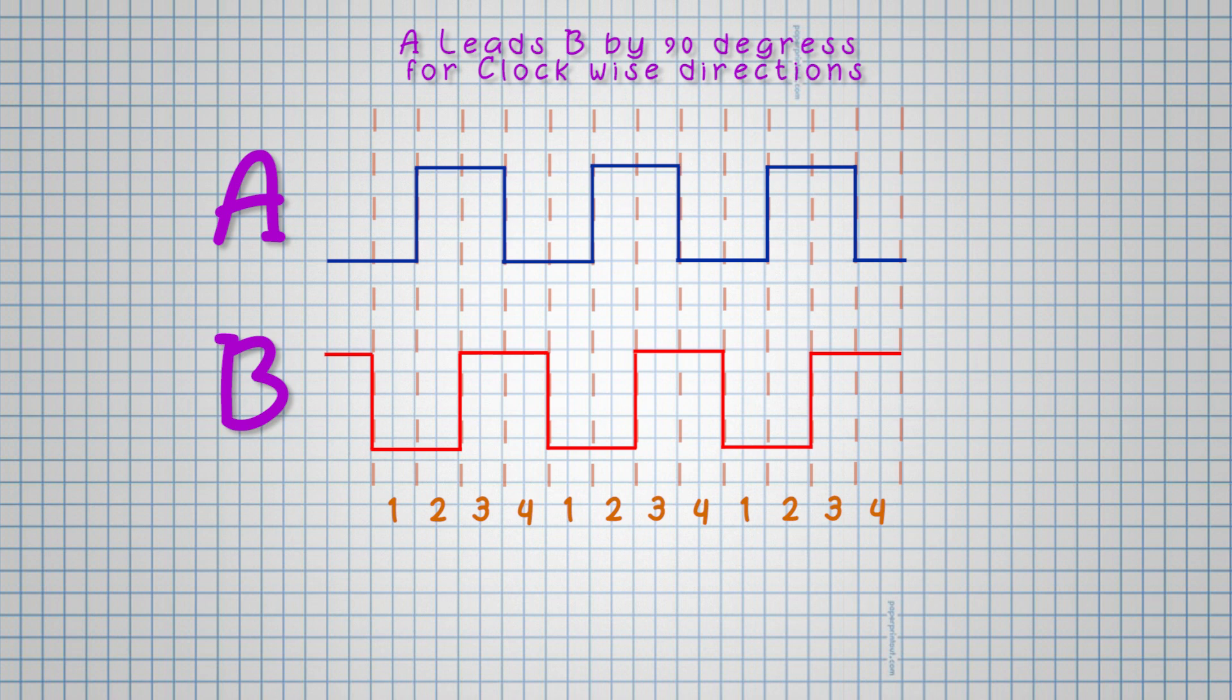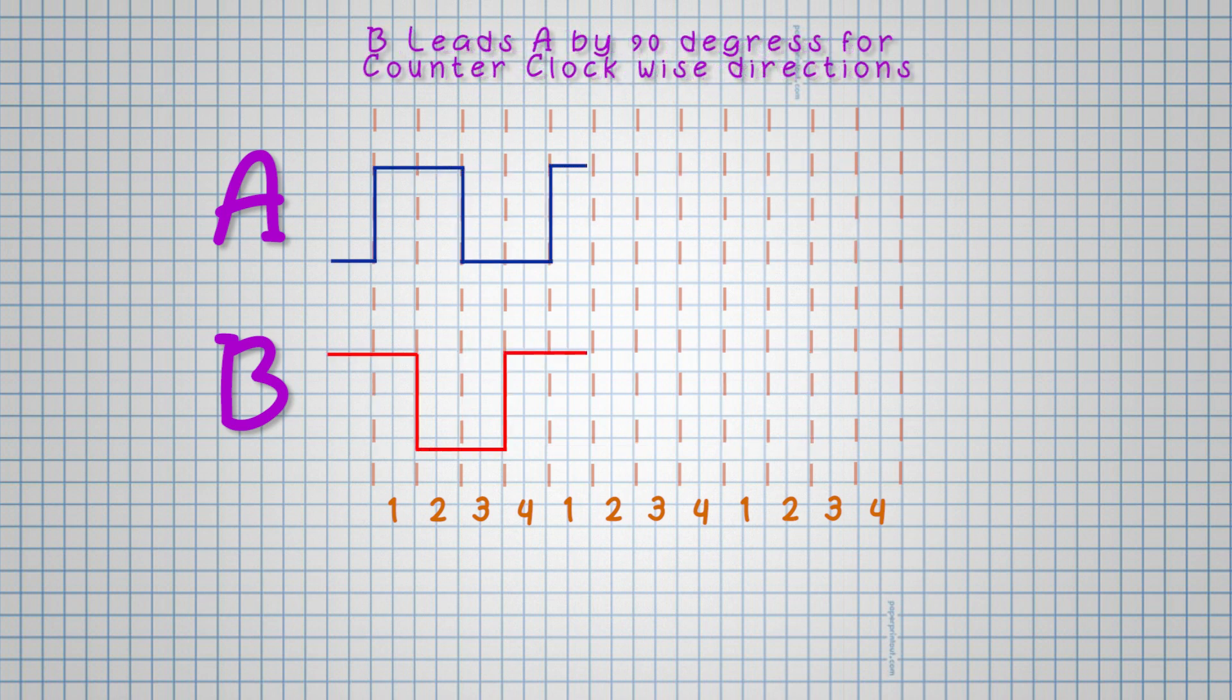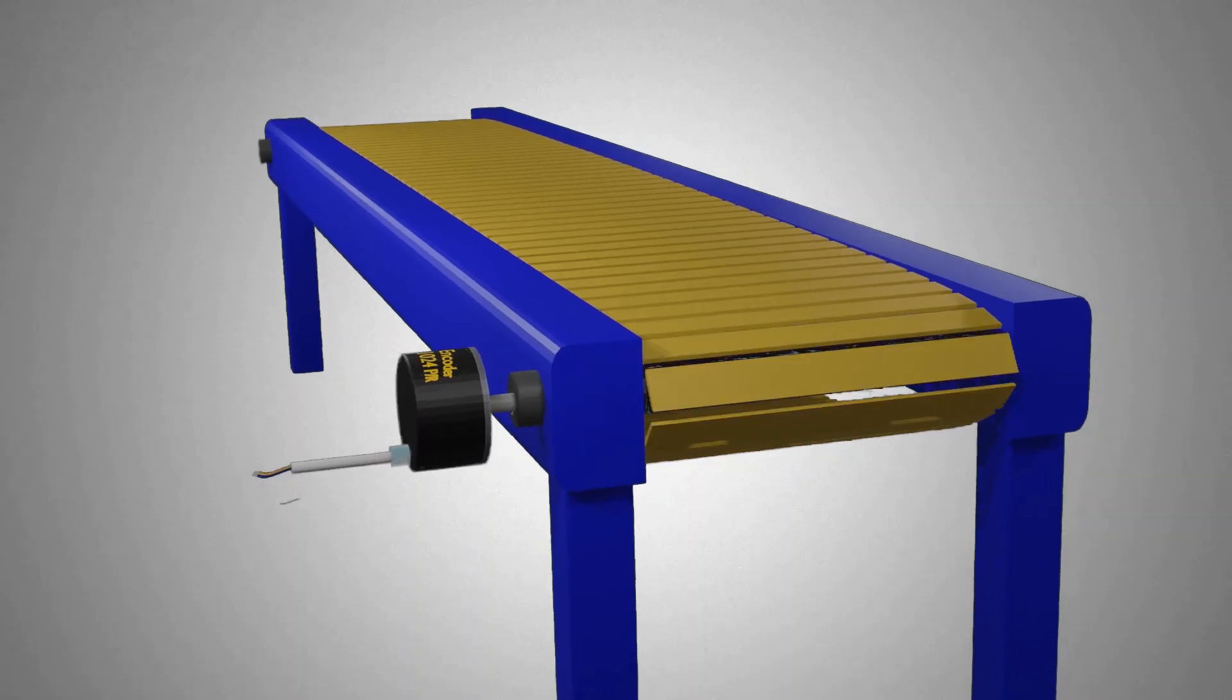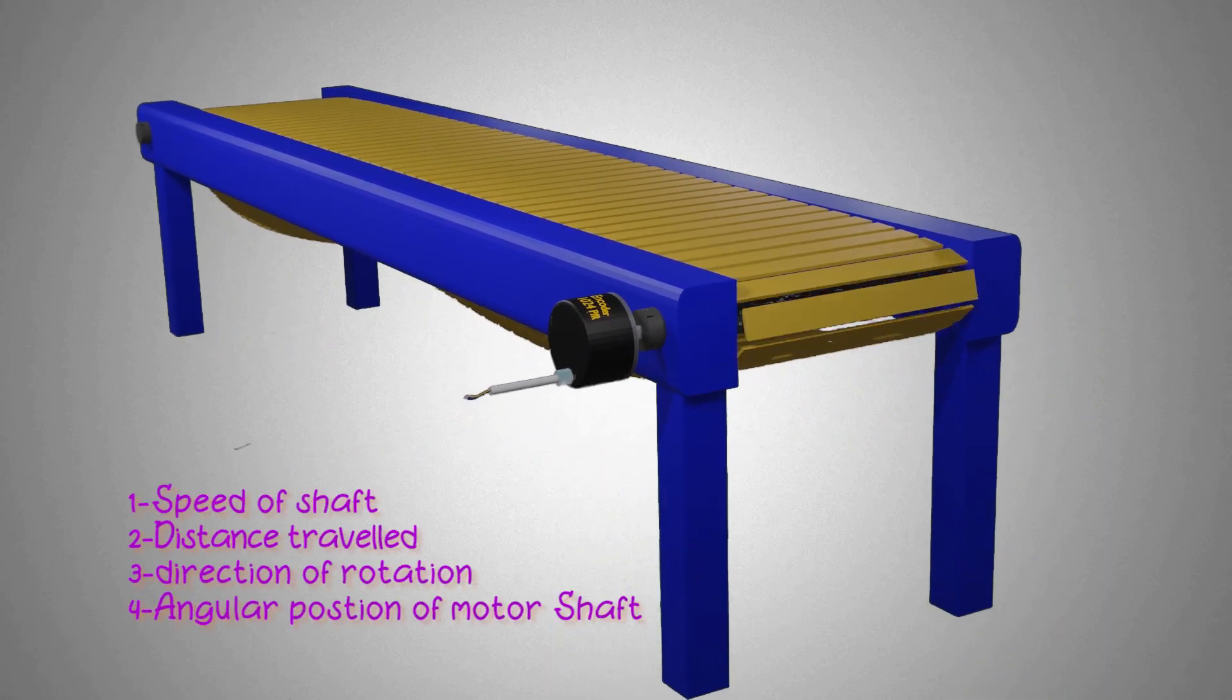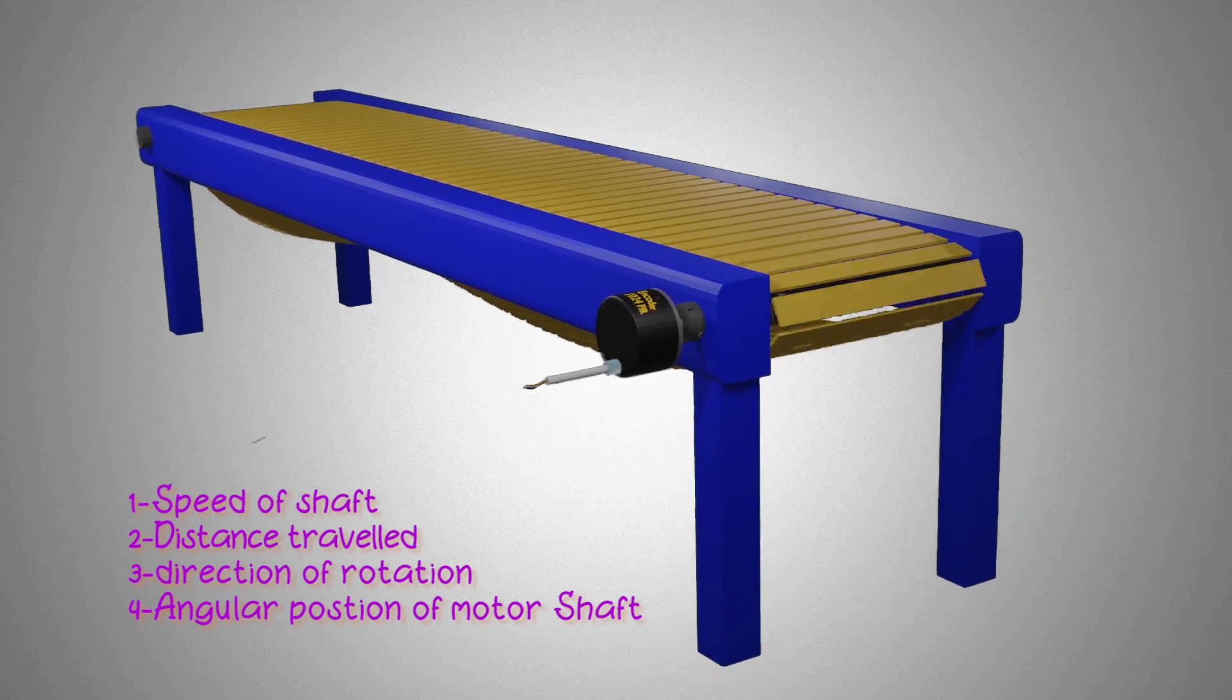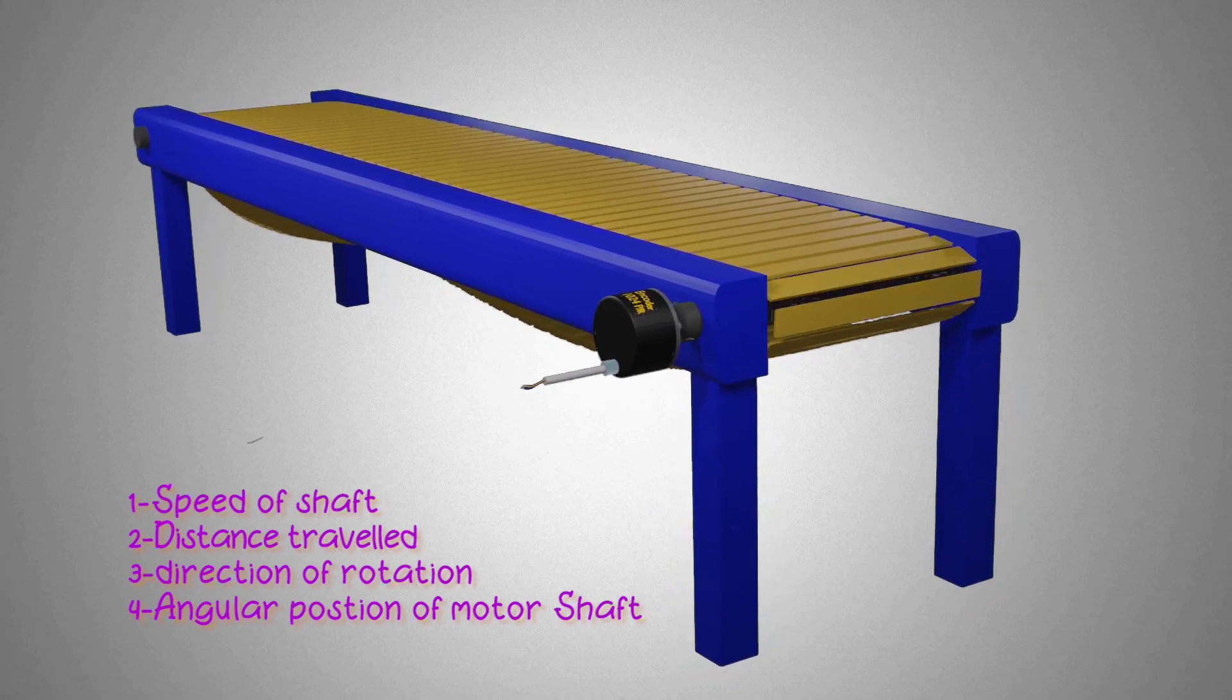With the two output square waves offset to each other by 90 degrees, as the encoder rotates it's possible to calculate which direction the shaft is moving by looking at the order of the incoming signal state change. These signals can be used to measure the speed of rotation and the distance traveled. With a little math, it's even possible to calculate the angular position of the shaft.